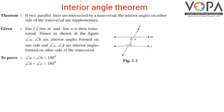The co-interior angle theorem states: if two parallel lines are intersected by a transversal, the interior angles on either side of the transversal are supplementary, meaning their sum is 180 degrees. In the figure, line L is parallel to line M, and line N is the transversal. Angle A and angle B are interior angles on one side, and angle C and angle D are interior angles on the other side of the transversal.